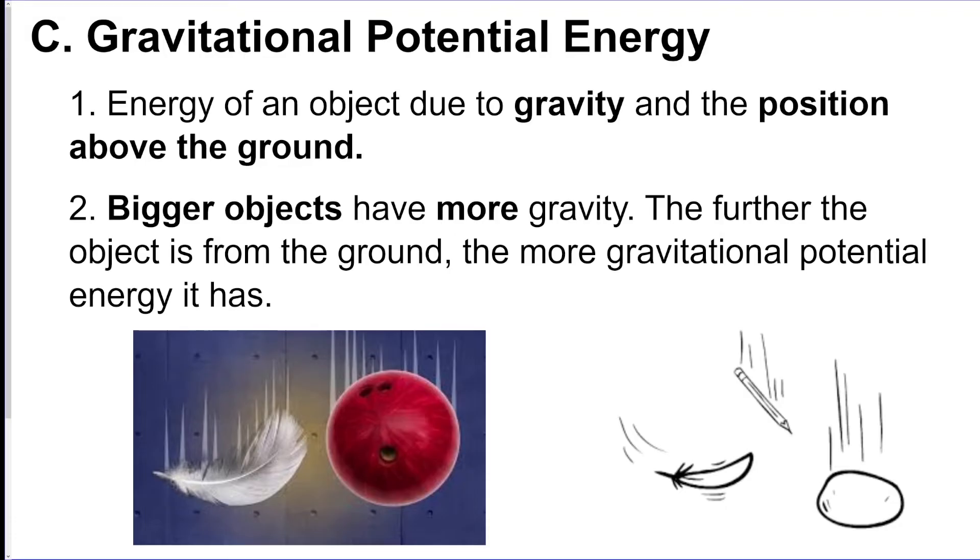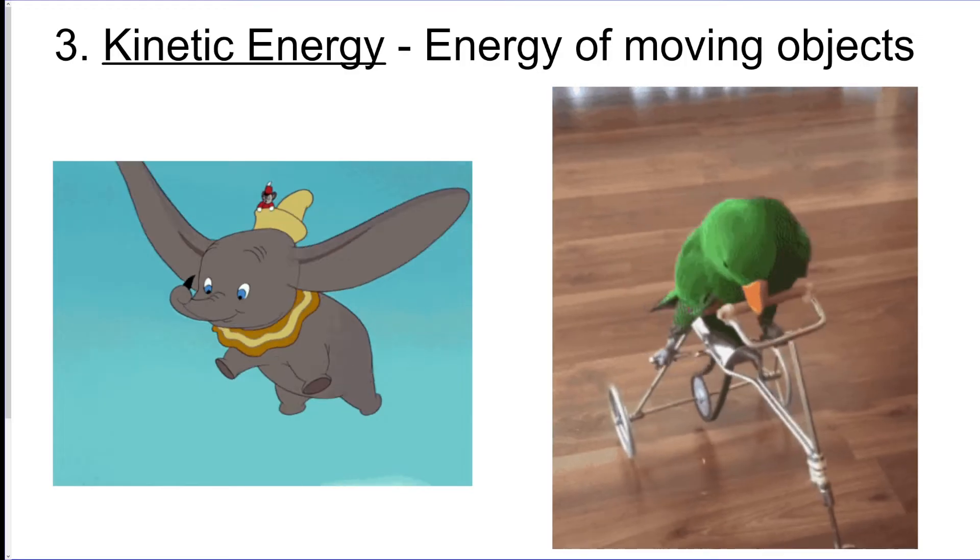You might know this, but bigger objects are going to have more of a gravitational pull. For example, a bowling ball would have more potential energy than a feather at the same height. Next up is going to be kinetic energy.